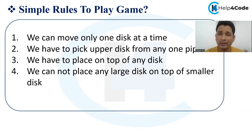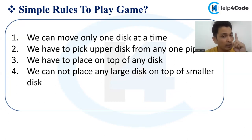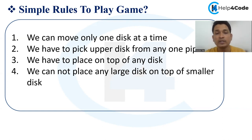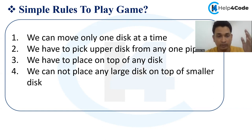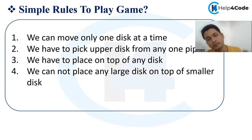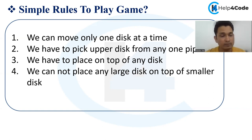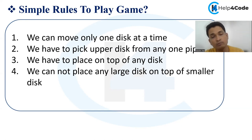There is a very simple rule to play this game. First rule: you can move only one disc at a time. You cannot take two or three discs at a time. Second rule: you have to pick an upper disc from any one pipe. As you have seen, we have three plates — a large plate, then a smaller plate two, then the smallest plate one. You can take only one disc at a time from the top.